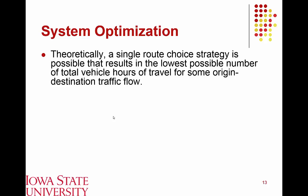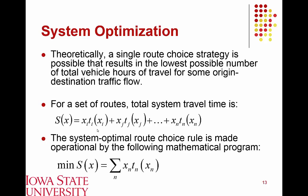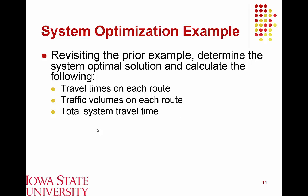In contrast to user equilibrium, under a system optimal solution there will likely be a single route strategy that minimizes total travel time across the system, but this does not necessarily correspond to the user equilibrium case. Mathematically, we return to the total system travel time function — the sum of volumes times travel times across all routes — and minimize it to obtain the system optimal solution with the volumes and travel times on each respective route.